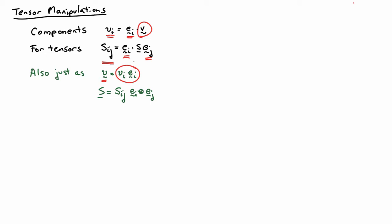When you expand that out, there are going to be nine terms: S11 E1 outer product E1, plus S12 E1 outer product E2, et cetera. That's just another representation of the tensor. Having this representation helps you see what's going on when you do various operations and can also help if you want to do a numerical calculation.